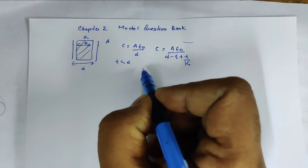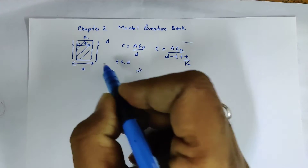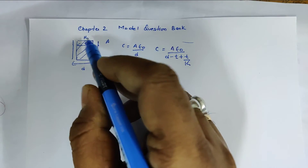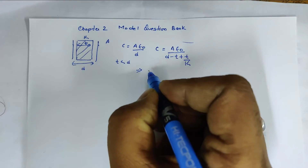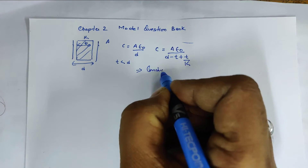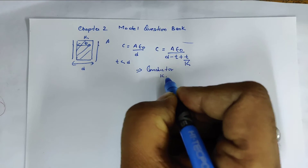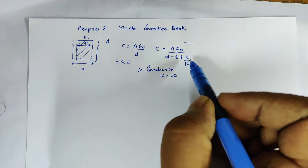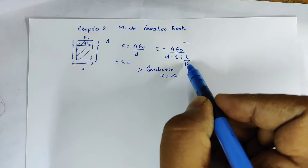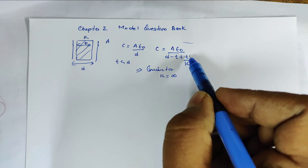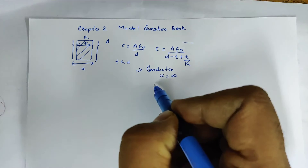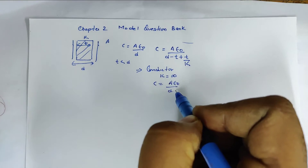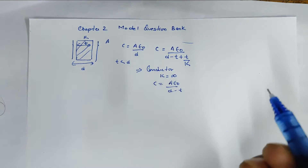Now, if this slab is a conductor, and you have a conductor in the dielectric slab, then K is equal to infinity — the dielectric constant is infinity. If you substitute infinity, T divided by infinity becomes zero. So the formula simplifies to C = Aε₀ / (D − T).